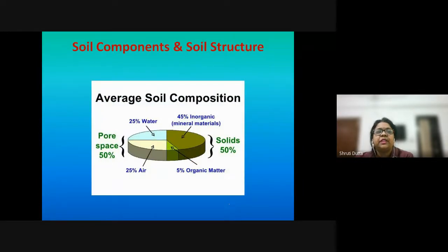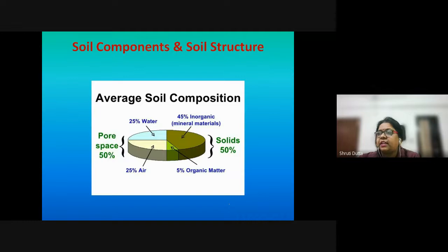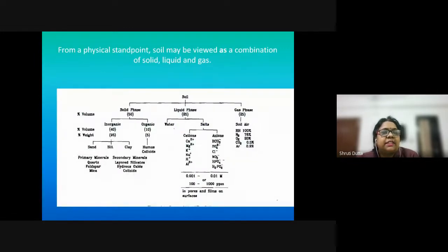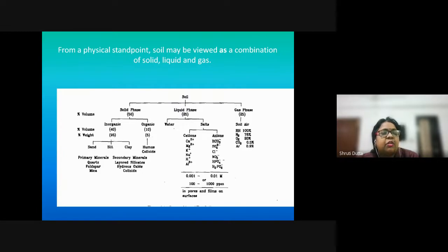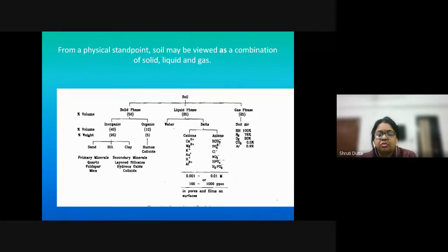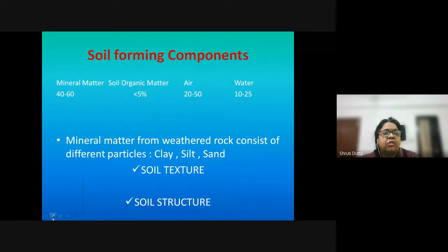Moving to the classification of soil components and soil structure: from a physical point of view, soil has a solid phase, a liquid phase, and a gaseous phase. For the solid phase, we have inorganic constituents such as primary and secondary minerals, and the organic content which is humus. In the liquid phase we have water and salts — cations and anions forming macro- and micronutrients. In the gaseous phase we have soil air.